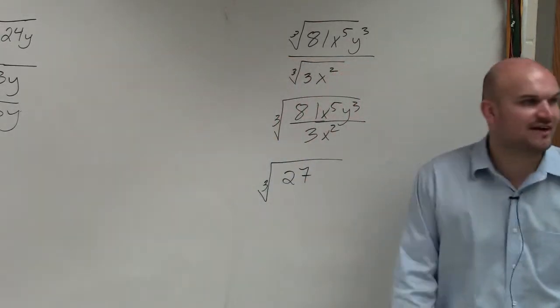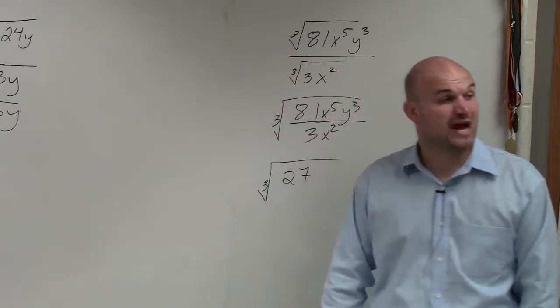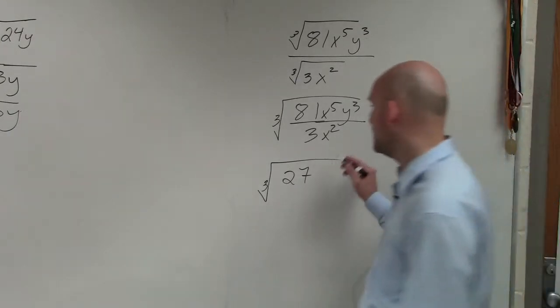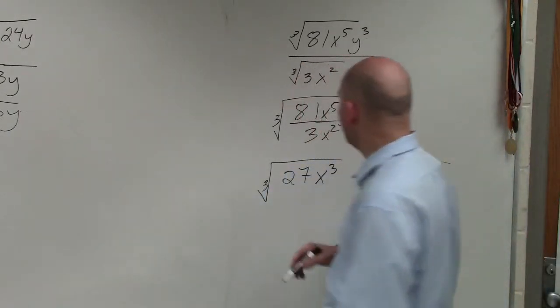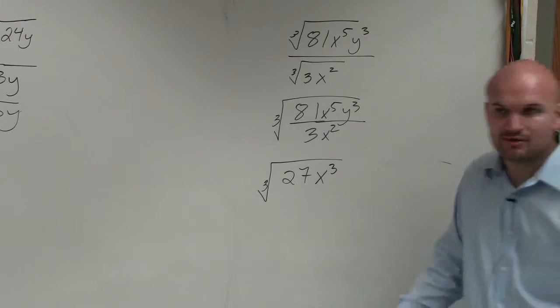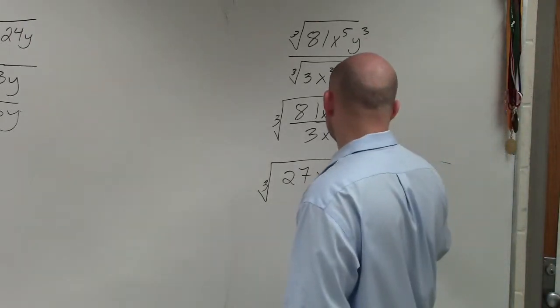x to the fifth divided by x squared—you subtract the powers, which gives you x to the third. And then I just have y to the third power. I can't do anything with that.